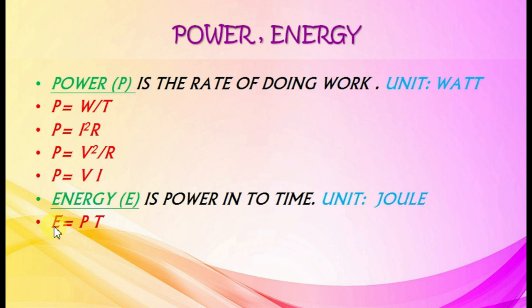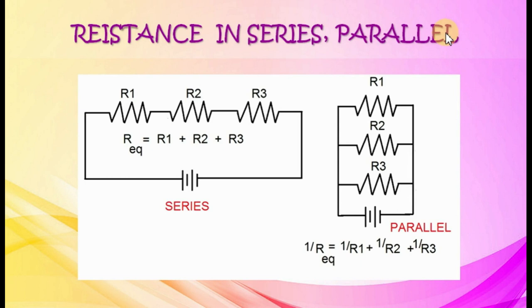Resistance in series and parallel. In a series connection, equivalent resistance is obtained by adding all the resistances. In case of parallel connection, the reciprocal of equivalent resistance is the sum of reciprocals of the parallelly connected resistances.